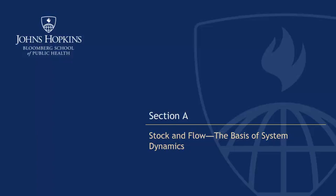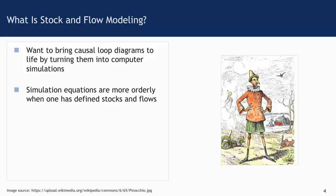So here is section A, where we talk about the stock and flow as the basis of system dynamics. This picture of Pinocchio symbolizes why we're talking this way. We always start with some rough sketched idea, a causal loop diagram. But if we want to bring that causal loop diagram to life, the same way Tinkerbell brings Pinocchio to life, we want to have a computer simulation. A simulation enterprise is going to be easier and the equations are going to be more orderly when one has gone through a causal loop diagram and defined which elements are stocks and which elements are flows.